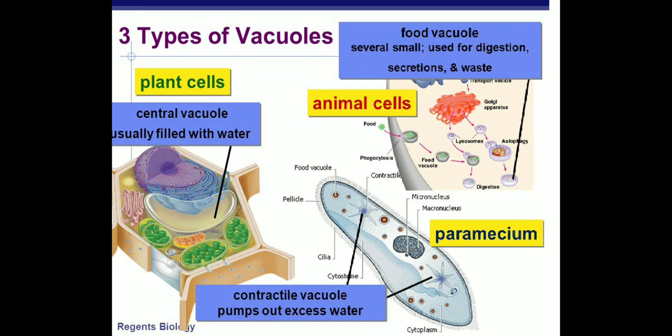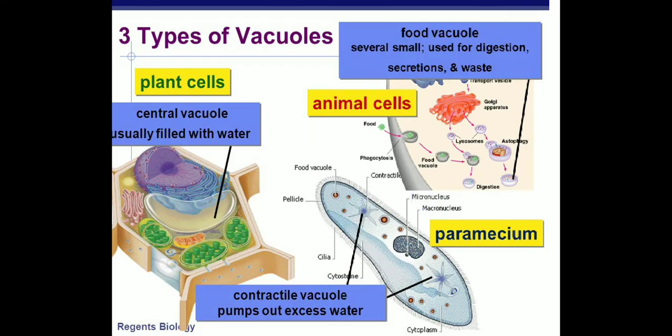The third type of vacuole is the contractile vacuole, which pumps out excess water and waste materials from the cell. You can see in the image that expansion and contraction occurs continuously — this process of expansion and contraction removes waste material from the cell. I hope you now have a clear understanding of protoplasm, cytoplasm, plastids, and vacuoles.